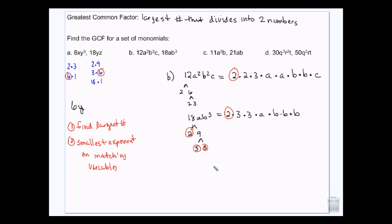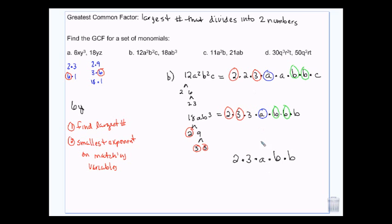They have a 2 in common. They have a 3 in common. They have 1 A in common. And they have 2 B's in common. So I take the numbers that they had in common and I multiply those back together — a 2, a 3, an A, and 2 B's. And that would be the greatest common factor. So this is another way that you can do it.